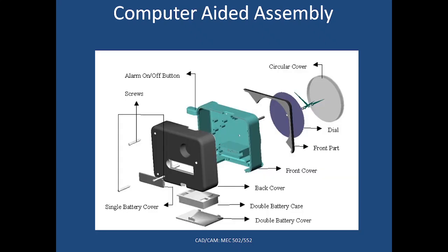This snapshot shows computer-aided assembly. This is an exploded view of an alarm clock — the other was the assembled view. You can see each and every part of the assembly, all indicated, and with this information available in the system you can plan for ease of assembly as well as disassembly.